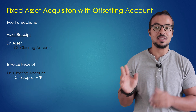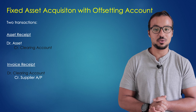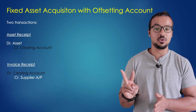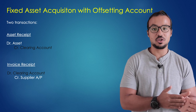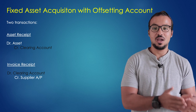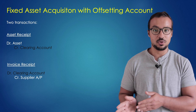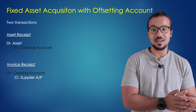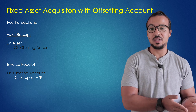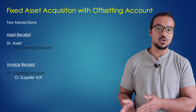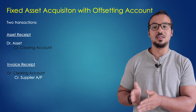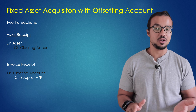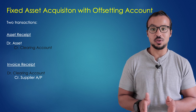The second business process is fixed asset acquisition against an offsetting account. We use this process when we want to separate the acquisition into two different transactions. In the first transaction, we post the asset acquisition with a debit to the fixed asset and a credit to an intermediary account. Then in the second transaction, we debit the intermediary account and credit the supplier accounts payable. This process also doesn't require any integration with materials management — it is only on the finance side.